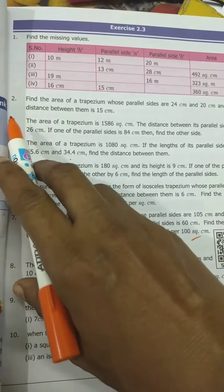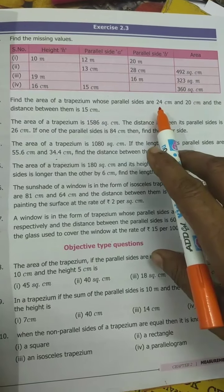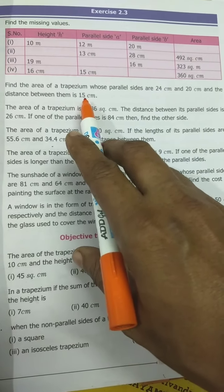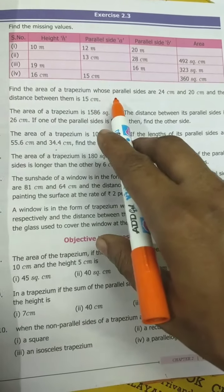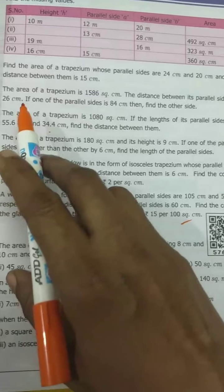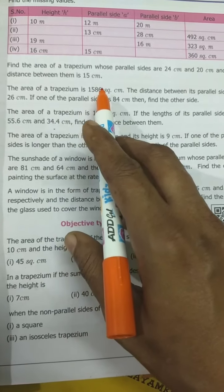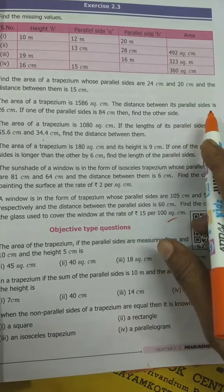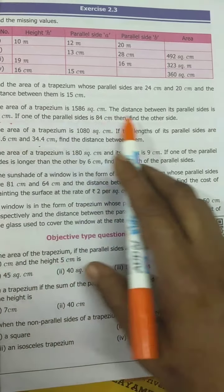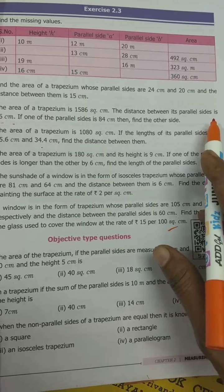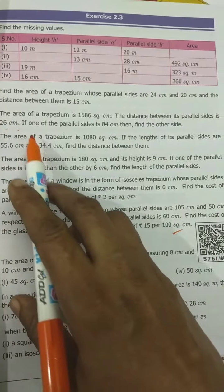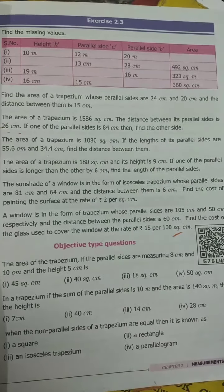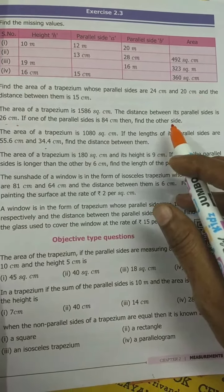We shall see exercise 2.3. Second sum is homework — parallel sides A and B and distance between them is 15 centimeters, that is H. You have to find the area. Now the second problem: the area of the trapezium is 1586 square centimeter. The distance between its parallel sides is 26 centimeter — that is the height. If one of the parallel sides is 84 centimeter, find the other side. A and H are given; you have to find the value of B.